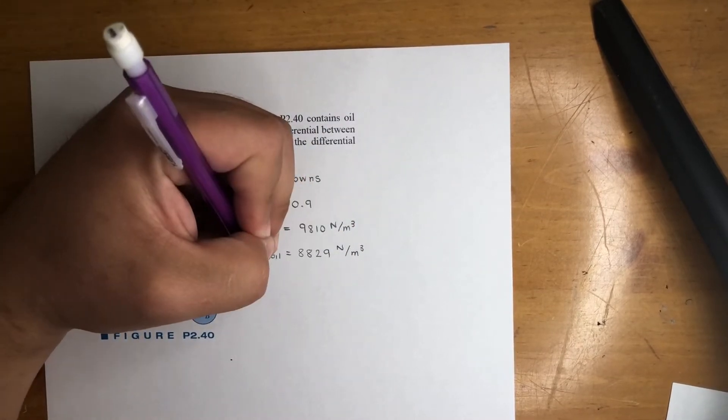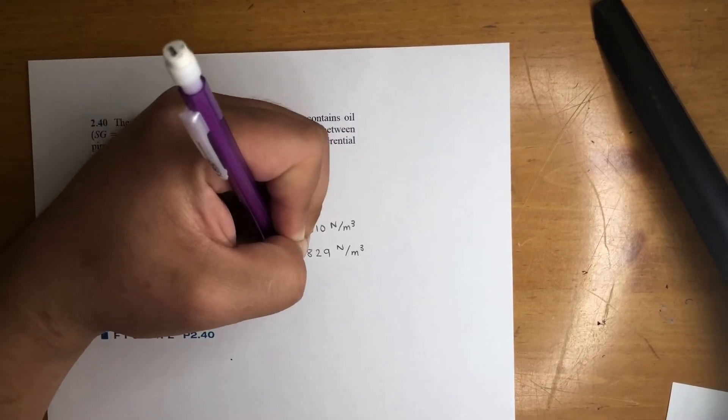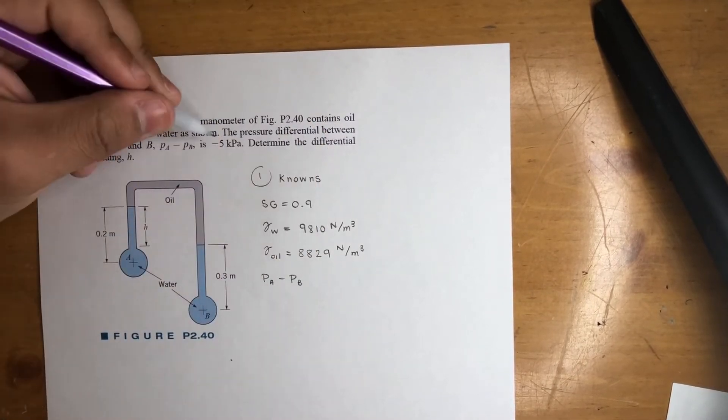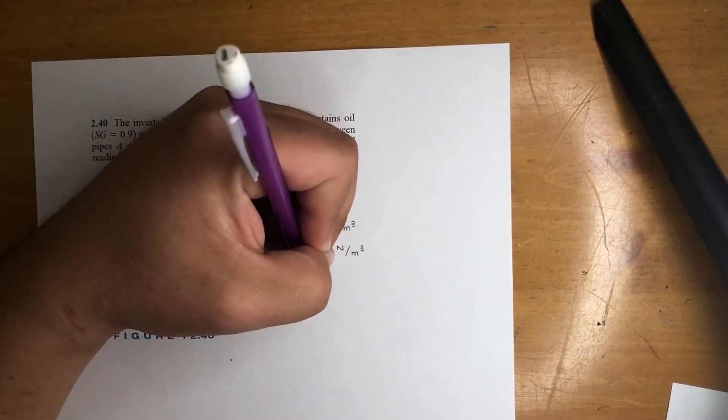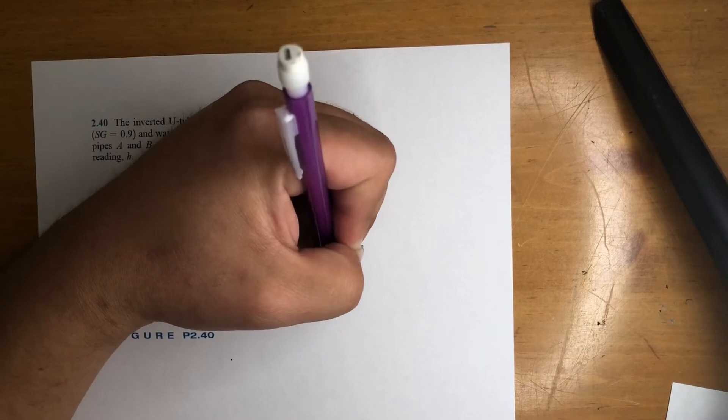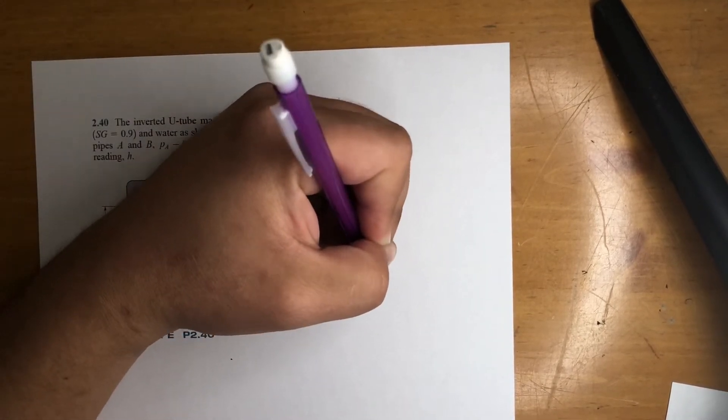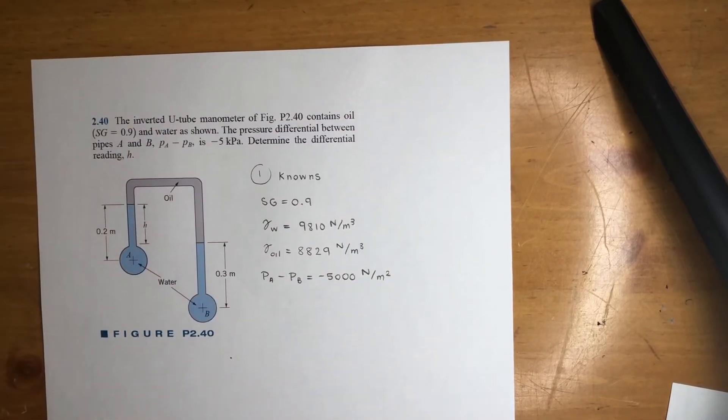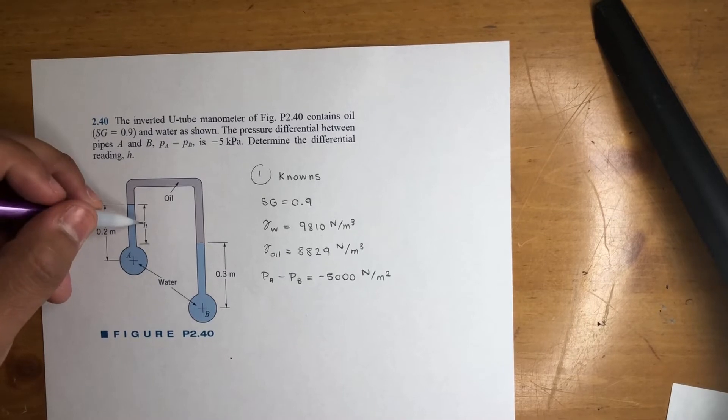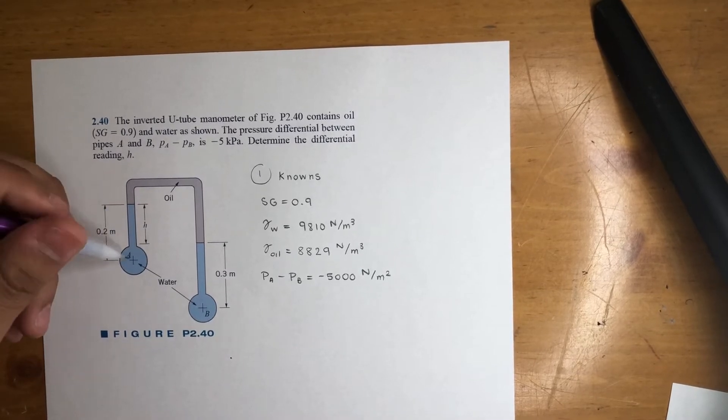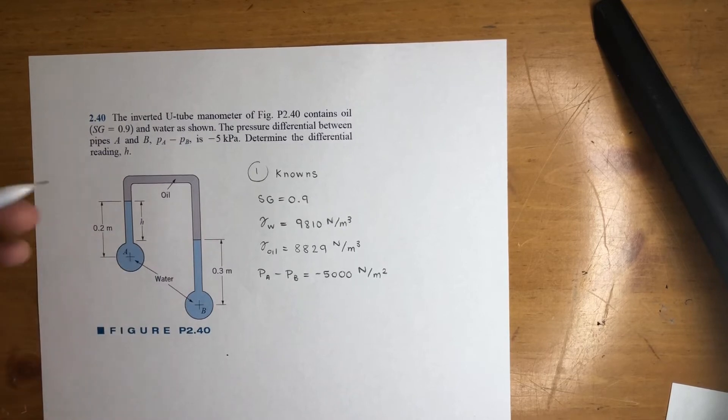And finally, we also know the difference in pressures between the two pipes. Now it's important to know it's PA minus PB, not the other way around. Just keep that in mind. That is negative 5,000 pascals or newton per meter squared. So this one should be pretty straightforward. We're just looking for H. We know everything else. We don't know the pressure here or the pressure here, but we know the difference.